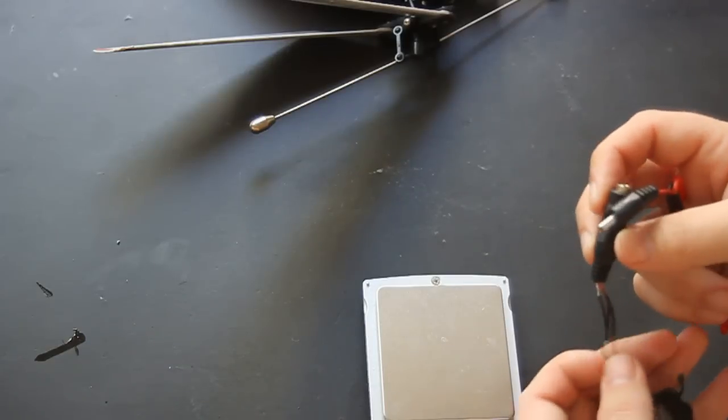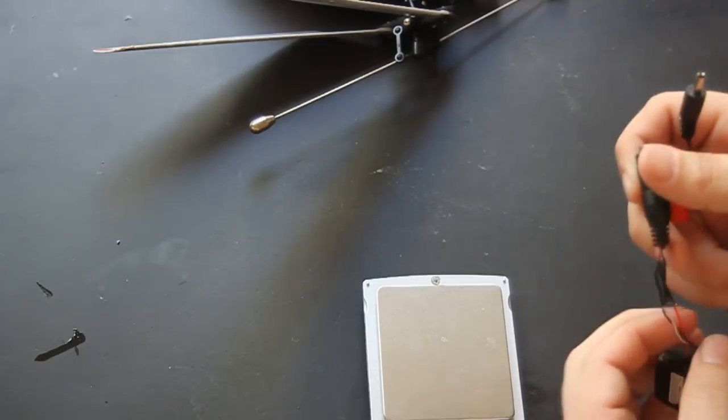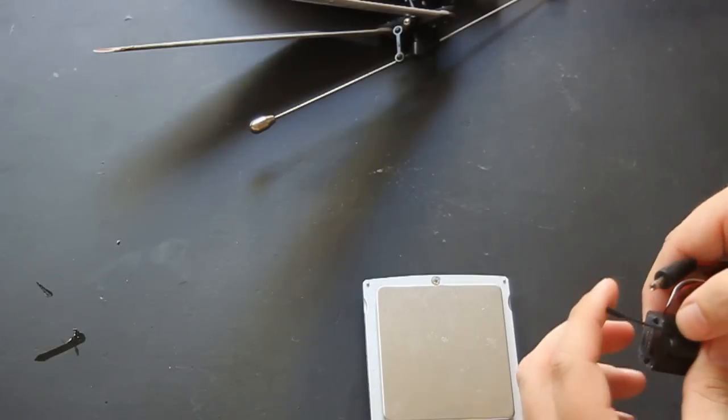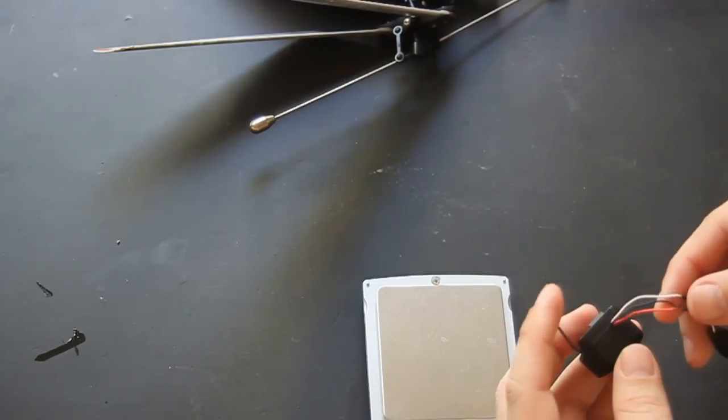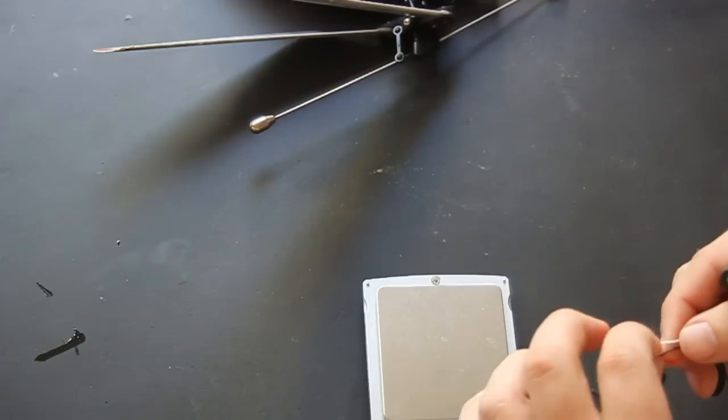But unfortunately, it appears that there is a resistor inside this connector that is dropping our voltage down to about 5 to 6 volts, and then split along two different rails, one for the actual transmitter and one for the camera. And of course, our black is ground.